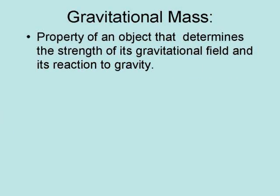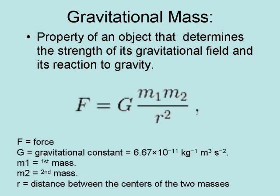Gravitational mass is the property of an object that determines the strength of its gravitational field and its reaction to gravity. It is based on Sir Isaac Newton's formula for gravity: F equals G M1 M2 divided by R squared, where F equals force, G equals the gravitational constant, M1 equals the first mass, M2 equals the second mass, and R equals the distance between the centers of the two masses.